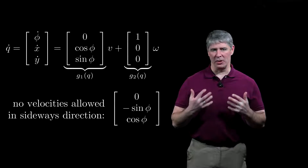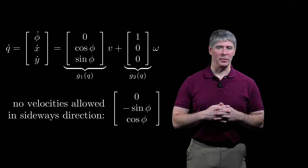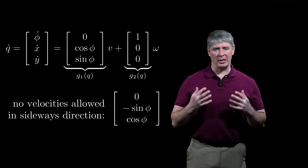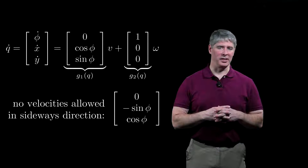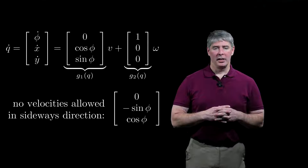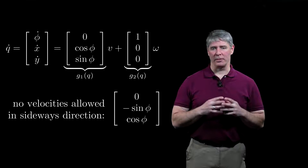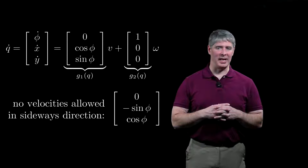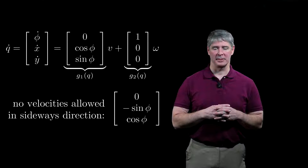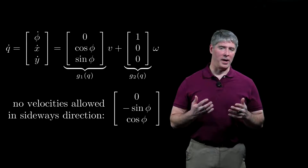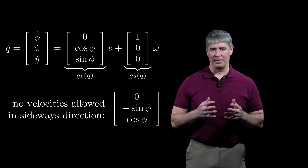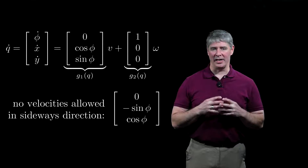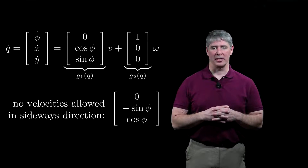This equation of motion means that no velocity is possible in the sideways direction. We would like to know if this constraint on the velocity of the chassis integrates to a constraint on its configuration. Equivalently, we ask whether following the system vector fields allows us to locally reach a full-dimensional subset of the configuration space. If so, then the robot is at least small-time locally accessible, or STLA, and the velocity constraint is not integrable to a configuration constraint.